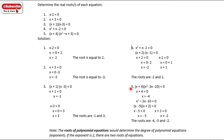For number 5, x plus 4 times x squared minus 3x minus 10 is equal to 0. First, x plus 4 equals 0, transpose, x is equal to negative 4. The other factor is x squared minus 3x minus 10. Using factoring: x minus 5 equals 0 and x plus 2 equals 0, giving x equals negative 5 and x equals negative 2. Therefore, the three roots are negative 4, negative 5, and negative 2.